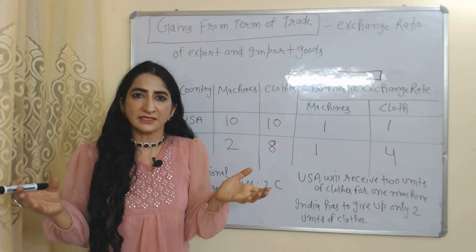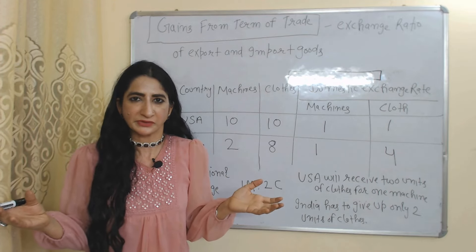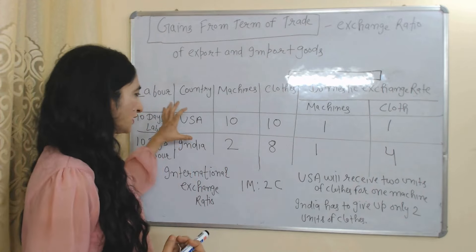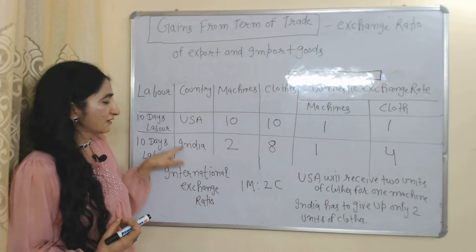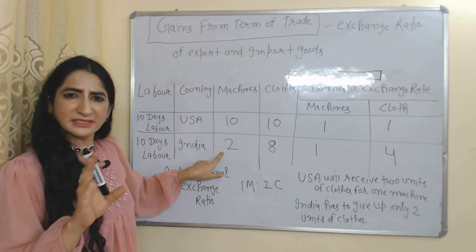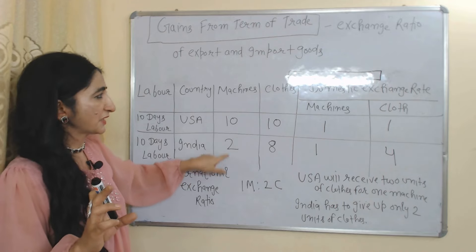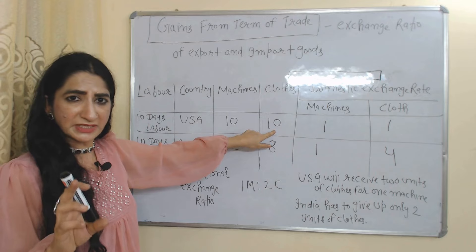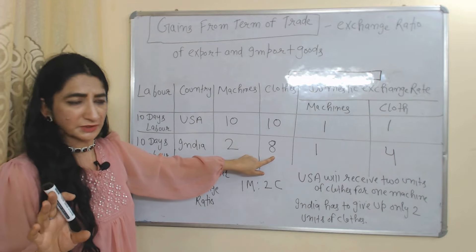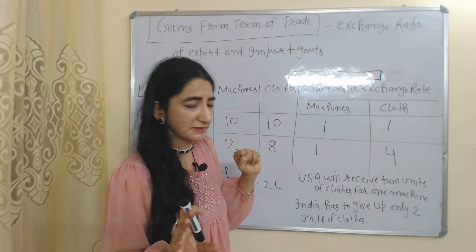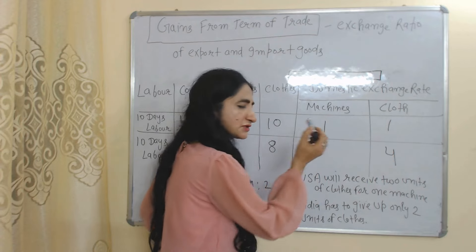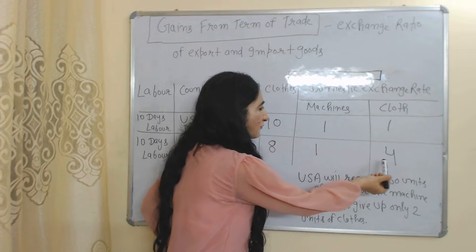Terms of trade mainly tells us the exchange ratio of export goods and import goods — how much import we are receiving compared to our export. We assume we have only two countries, USA and India. With 10 days of labor, USA can produce 10 machines and India can produce 2 machines. With 10 days of labor, USA can produce 10 units of clothes and India can produce 8 units of clothes. At the domestic level, USA can receive 1 unit of cloth in exchange for 1 machine, and India can receive 4 units of cloth in exchange for 1 machine.